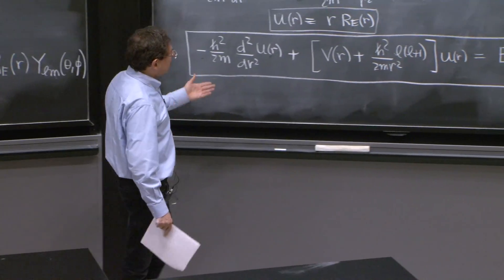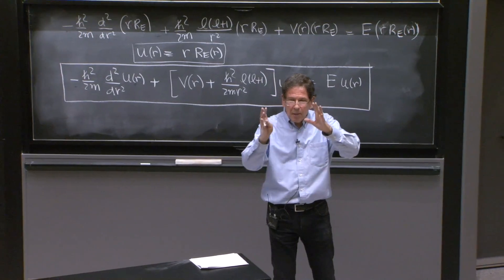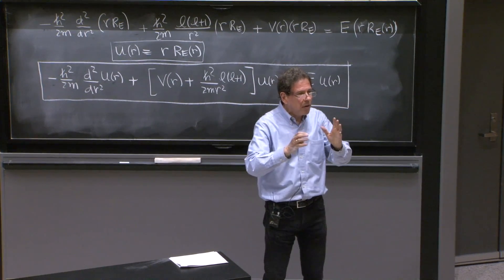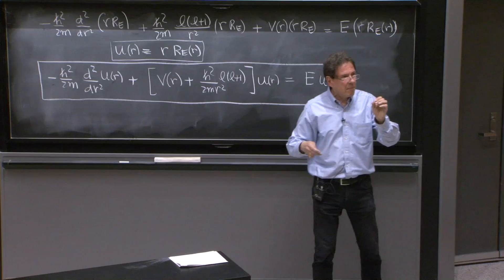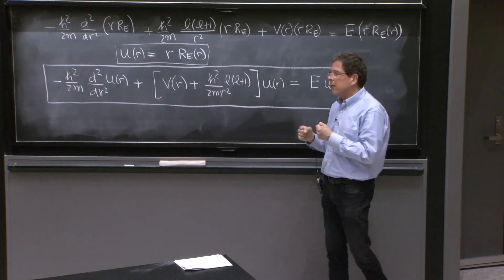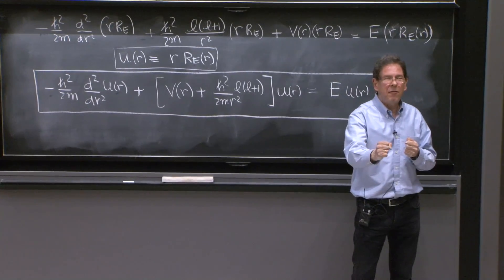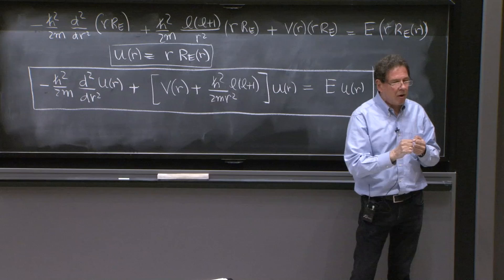There is an effective potential, as it's described here. Yes, there is a potential, the central force. But if there is angular momentum, it's like a centrifugal barrier. With angular momentum, it becomes very difficult to reach the origin.